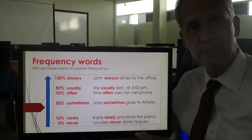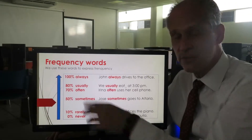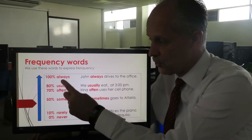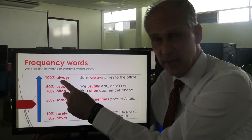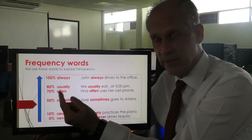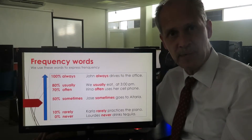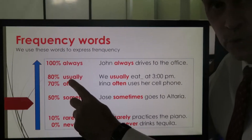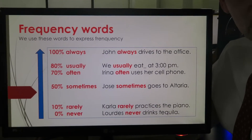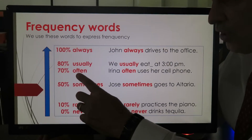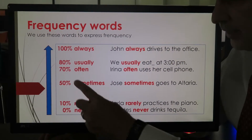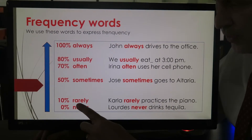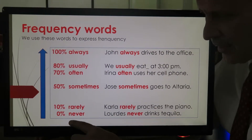These are frequency words — we use words to express how often or how frequently. Always, like 'siempre,' means 100%. Usually is very similar to Spanish 'usualmente.' Often is like usually. Sometimes means 50%. Rarely means very little.